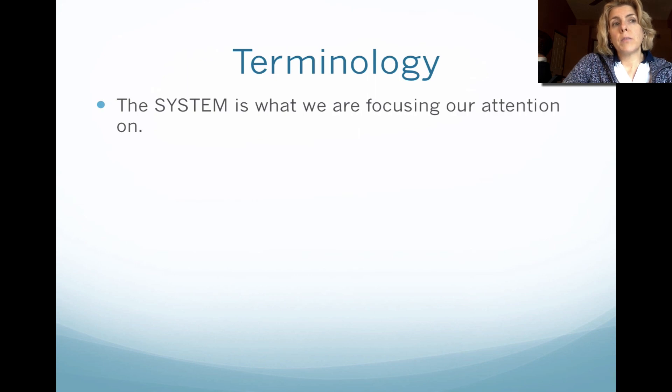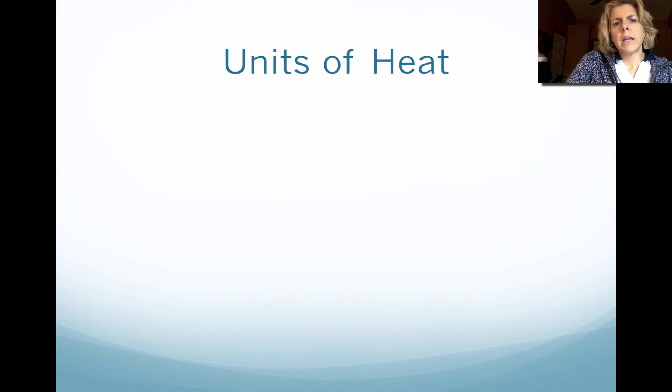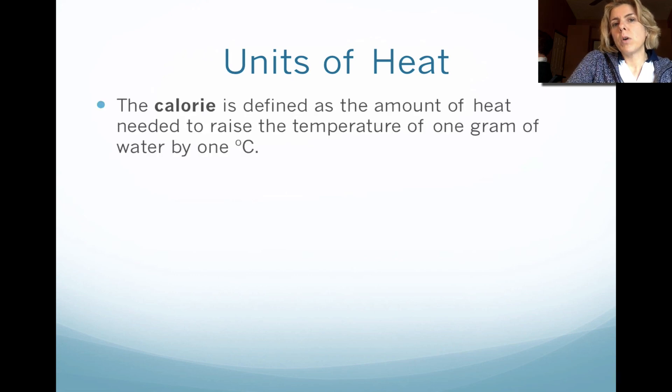Now in order to understand this, we need to define a couple things. We call what we're looking at a system. So when we're looking at a chemical reaction, the reaction itself is called the system, and anything outside of that chemical reaction is considered the surroundings. In addition to that, we need to define what is heat.